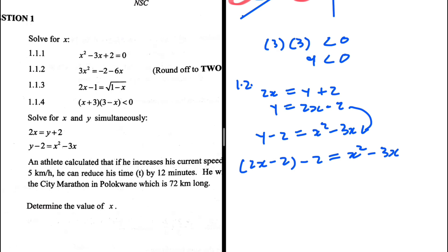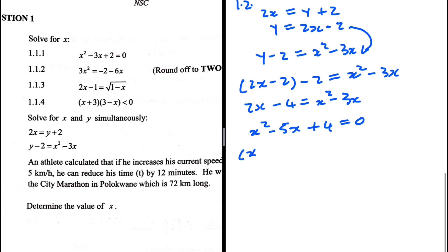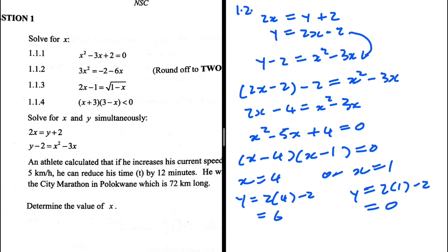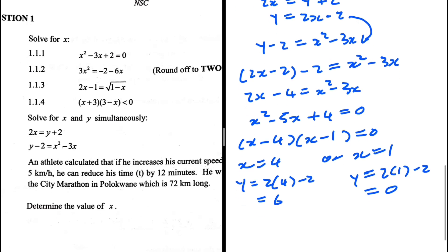We're not squaring a fraction — much simpler. Simplifying: 2x minus 4 equals x squared minus 3x, which gives x squared minus 5x plus 4 equals 0. This factorizes as (x minus 4)(x minus 1) equals 0, so x equals 4 or x equals 1. If x equals 4, then y equals 2(4) minus 2 equals 6. If x equals 1, then y equals 2(1) minus 2 equals 0. That is 1.2.